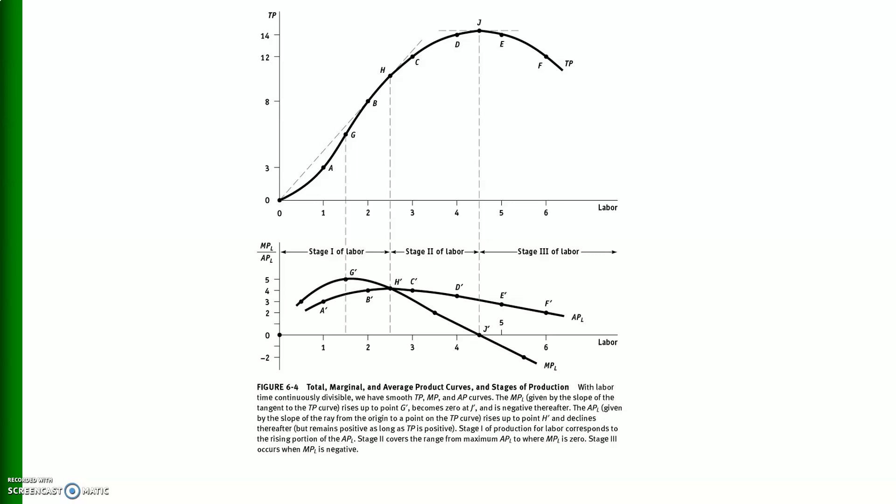This diagram subdivides total production into three stages. Stage one of production runs up to the point where marginal product equals average product. Stage two — the economic region — runs from that point up to point J, where marginal product of labor is less than average product. Production will take place in this stage two region. Beyond point J, where marginal product reaches zero, begins stage three.